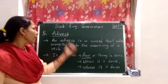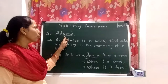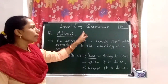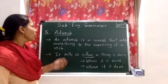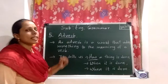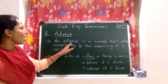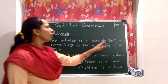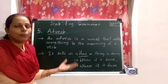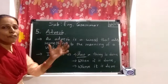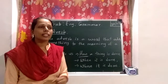Hello students, let's continue with the 5th part of speech — adverb — in English grammar. First of all, we will see what is an adverb. An adverb is a word that adds something to the meaning of a verb. Adverb kya hota hai? Jo verb ke meaning mein add kare. For example: